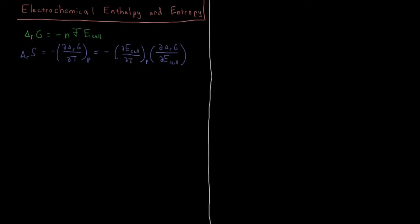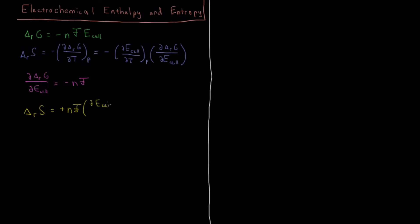Applying the chain rule, this is equal to minus the partial derivative of E cell with respect to temperature at constant pressure times the partial derivative of reaction Gibbs energy with respect to the EMF. Differentiating the Nernst equation with respect to E cell, we get that the partial derivative of reaction Gibbs energy with respect to E cell is equal to minus NF — they're just linear with each other. Substituting in, our entropy of reaction for an electrochemical cell is positive NF times the partial derivative of the EMF with respect to temperature at constant pressure.